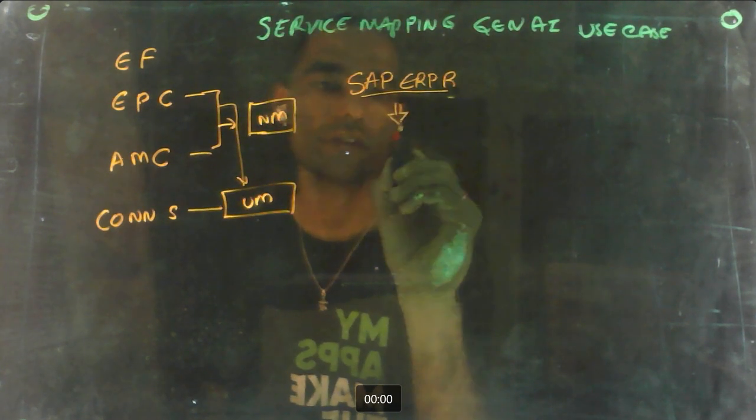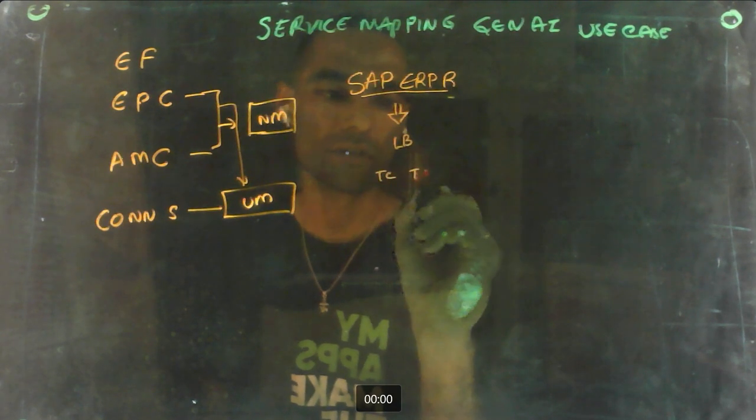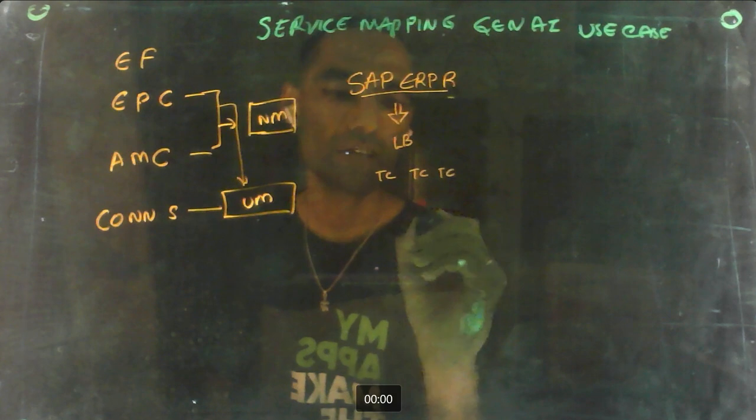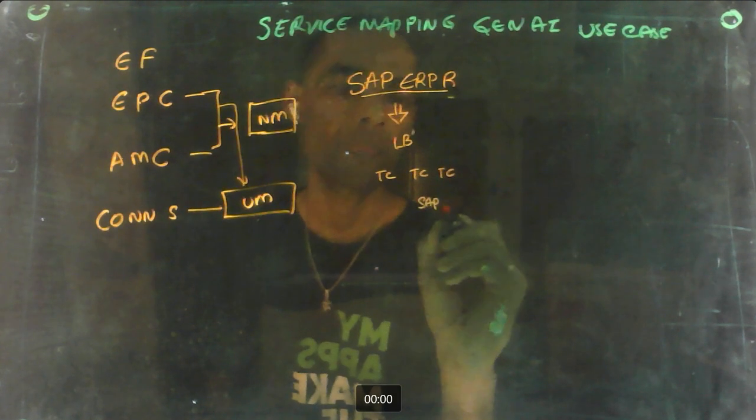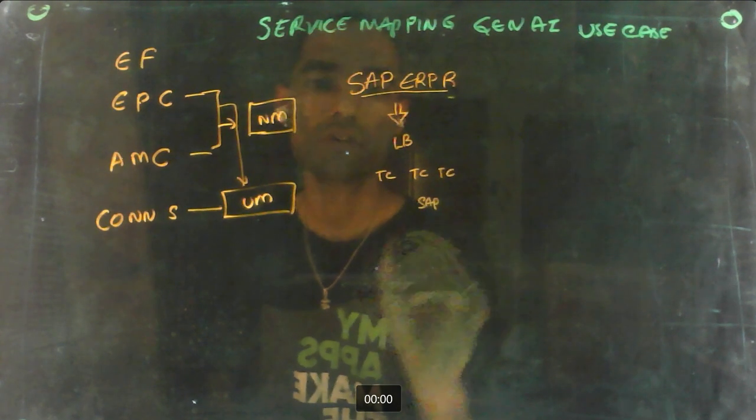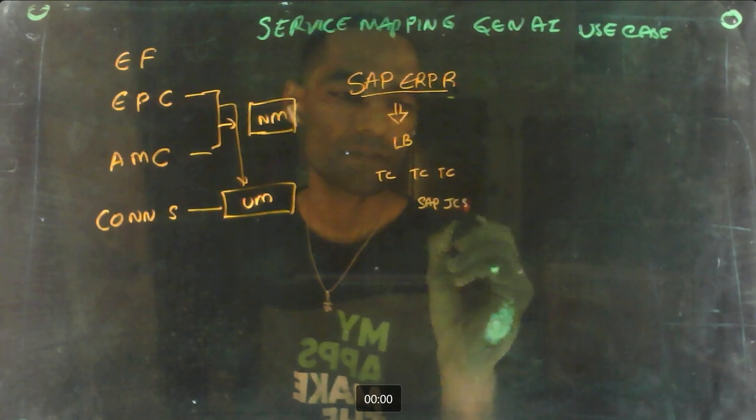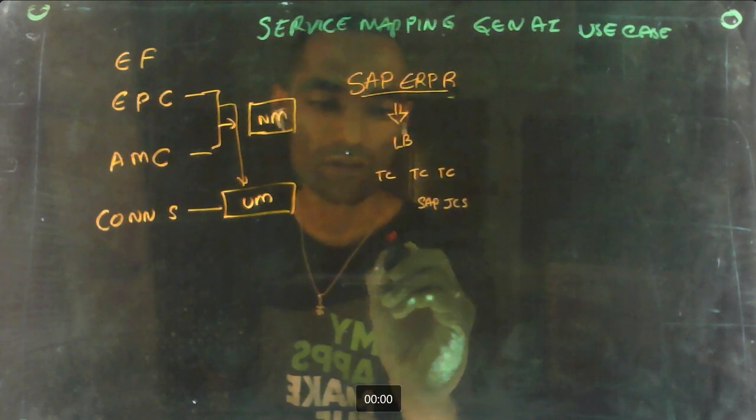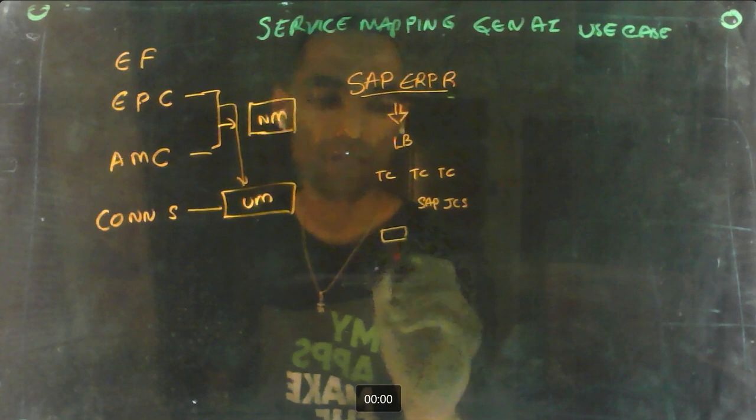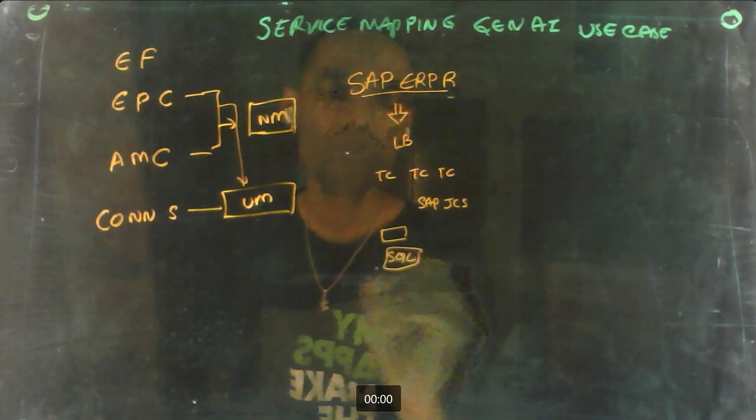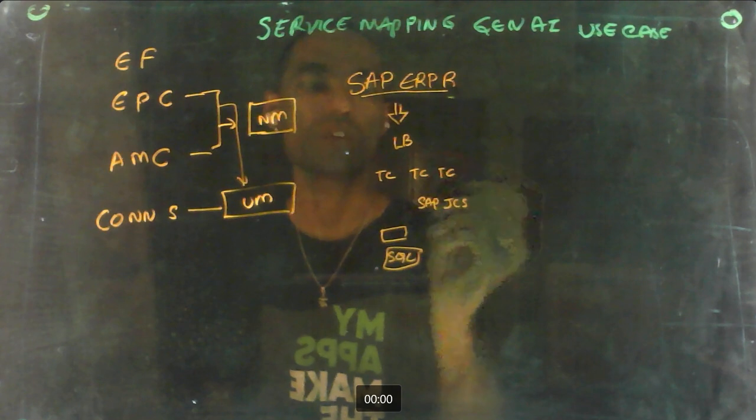You have an entry point and then you have load balancer, then you have your app servers, and then you have SAP specific apps like ASCS and so on or JCS, and then you have your load balancer for databases and then you have databases. This is how the general structure would look like for the production map.